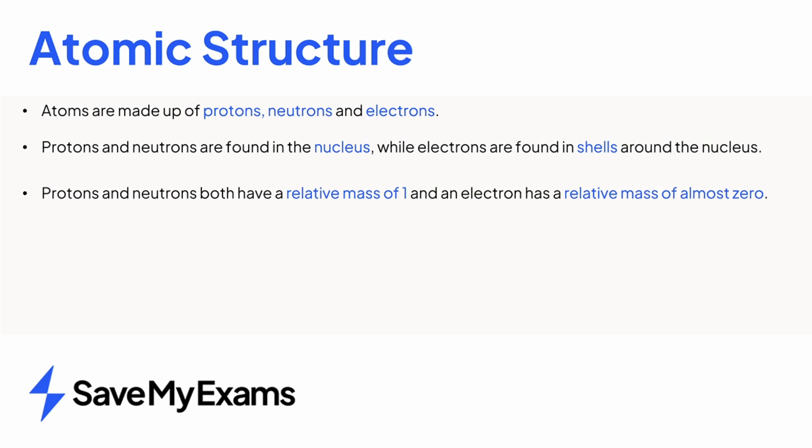The mass of both protons and neutrons is one, while electrons have almost no mass. Protons have a positive charge, plus one. Neutrons have no charge, zero. Electrons have a negative charge, minus one.